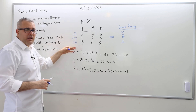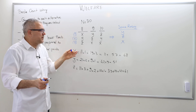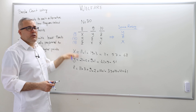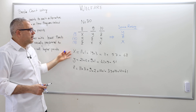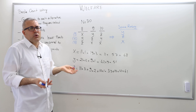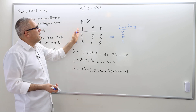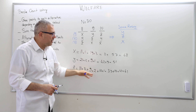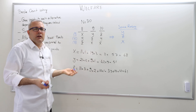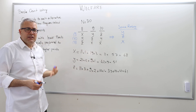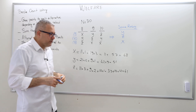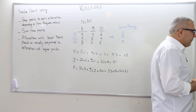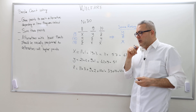If we have more than three alternatives, we necessarily give four points, five points, and so on depending on how many alternatives there are, so the calculation becomes slightly more complicated. With more voters or agents the calculations are also a bit more involved, but this is exactly how Borda count works.